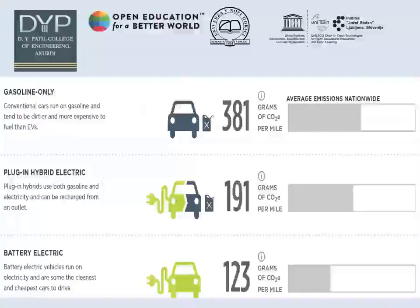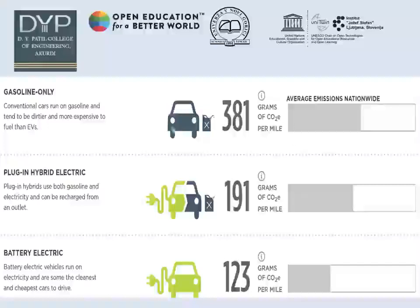Now, calculations of carbon footprint: there is a comparison of carbon footprints from three types of vehicles. Conventional cars run on gasoline and tend to use more expensive fuel than EVs — 381 grams of CO2 per mile is the carbon footprint emitted from gasoline alone. A plug-in hybrid electric vehicle works partially on conventional fuel and partially on electricity, and can be recharged from an outlet. Its emission is 191 grams of CO2 per mile.